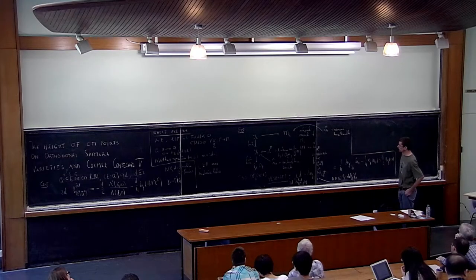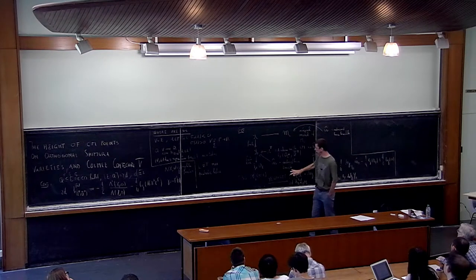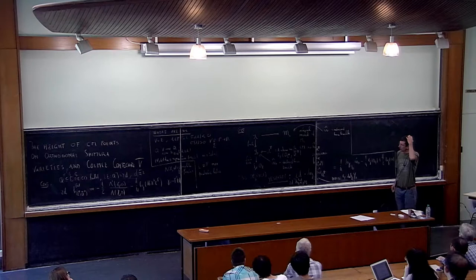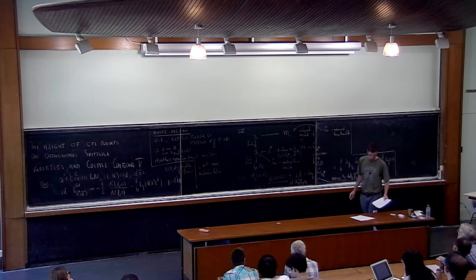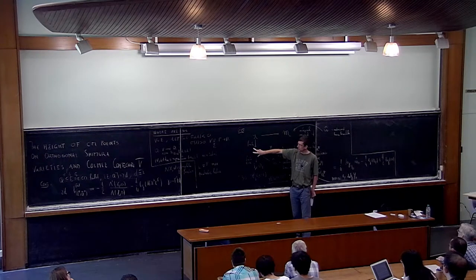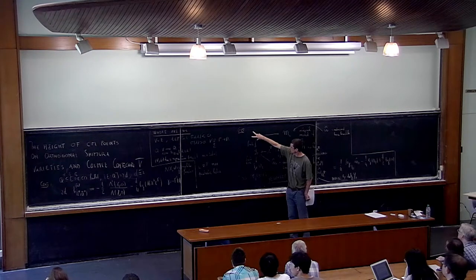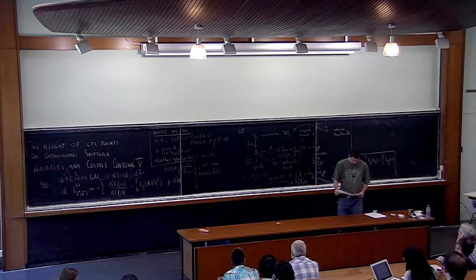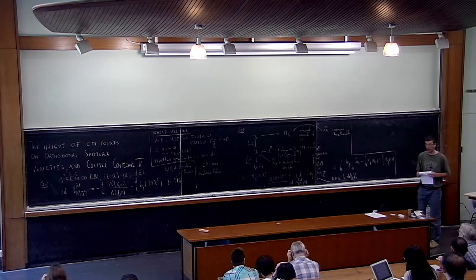What I want to do now is compare the pullback of this metrized line bundle to Y_L and the pullback of ω̂₀ to Y_L. That comparison can be done only up to log of some bad primes, which are defined in terms of the lattice. Remember that this is intrinsically defined in terms of E and the choice of σ₀, while for the definition of Y_L the lattice really played a role. So let me be precise about what I consider to be bad primes.